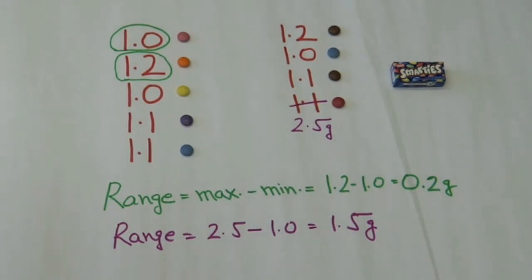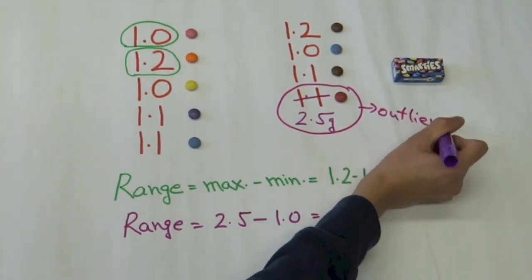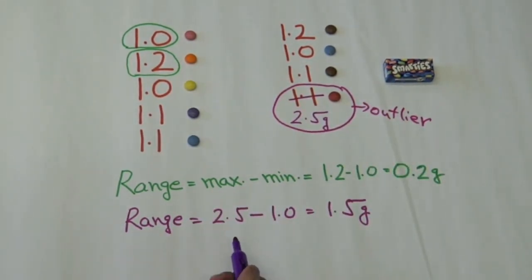This shows that range does not account for outliers like this. It's not a very good measure for variability.